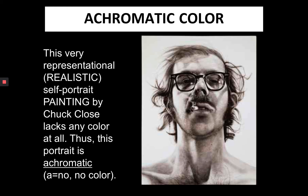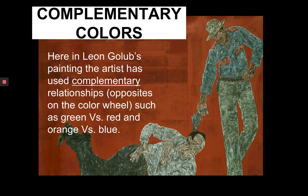'A' meaning no, 'chroma' meaning color — means that it has no color at all. Complementary colors spelled with an E means that these are colors that are opposite on the color wheel. By positioning them together, it intensifies the color next to it. So you may have green against red or blue against orange, very evident in this work. That creates a very tense relationship, and usually this is used to either draw attention or create tension in a work of art.